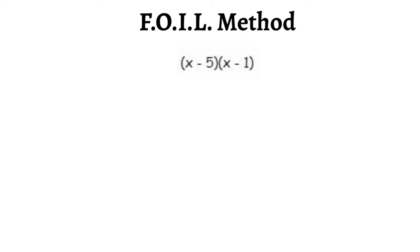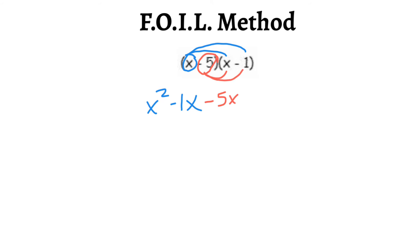Here we have FOIL method: x minus 5 times x minus 1. I'm going to distribute this first term into the second binomial. x times x gives me x squared, and x times negative 1 gives me negative x. Then I take the second term, minus 5, and distribute into the second binomial again. Negative 5 times x gives me negative 5x, and negative 5 times negative 1 gives me positive 5. I'm doing double distributive property, or FOIL.